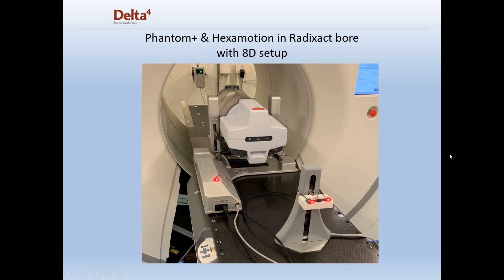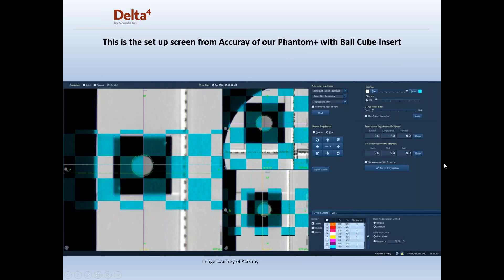They can track the breathing motion separate from the tumor motion, and that's exactly what's being shown in this photograph. This is futuristic for Accuray, but the technology already exists for them to do this. What you see on screen is a screenshot from the Accuray system showing the Delta IV Phantom Plus along with an Accuray ball cube insert.